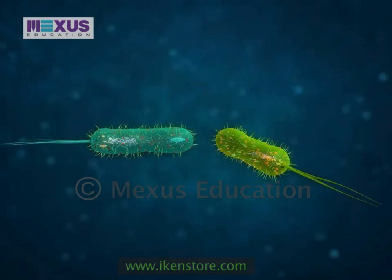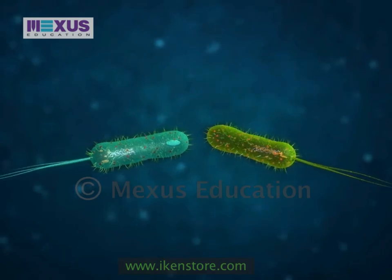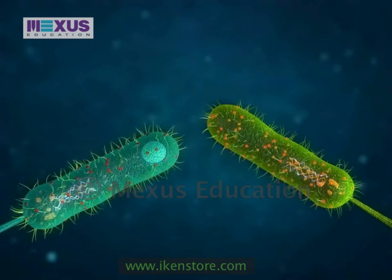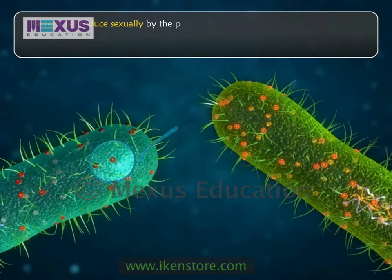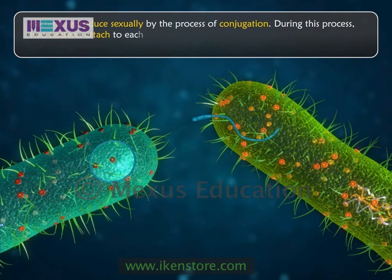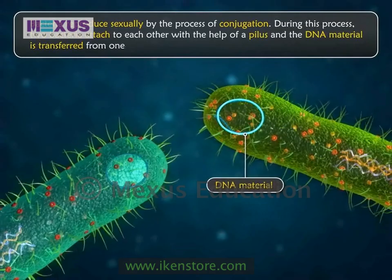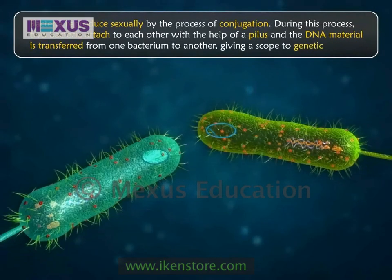Binary fission does not allow genetic diversity, which is needed for bacteria to withstand the changing environment. Bacteria also reproduce sexually by the process of conjugation. During this process, two bacteria attach to each other with the help of a pilus and the DNA material is transferred from one bacterium to another, giving scope to genetic diversity.